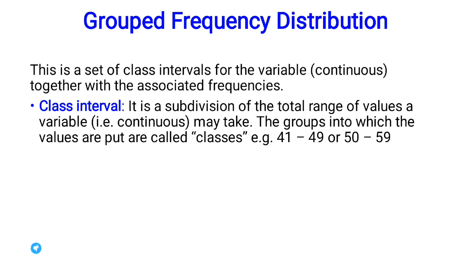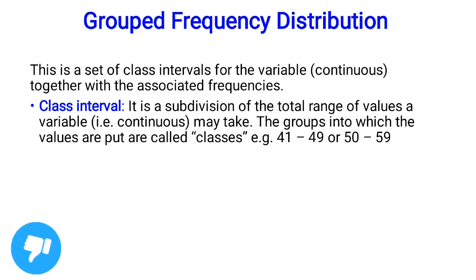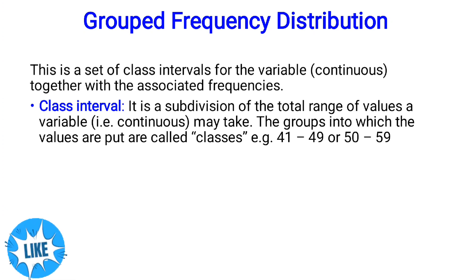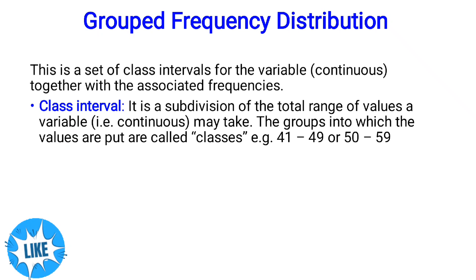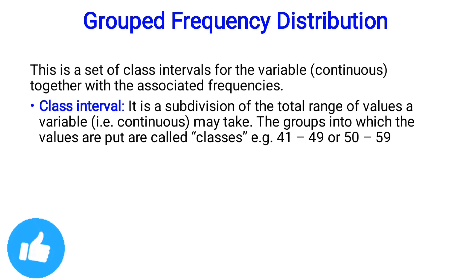These are some of the terms we need to look at when it comes to grouped frequency distribution. First, the class interval. A class interval is a subdivision of the total range of values a continuous variable may take — the groups into which the values are placed. For example, 41 to 49 is a class interval.